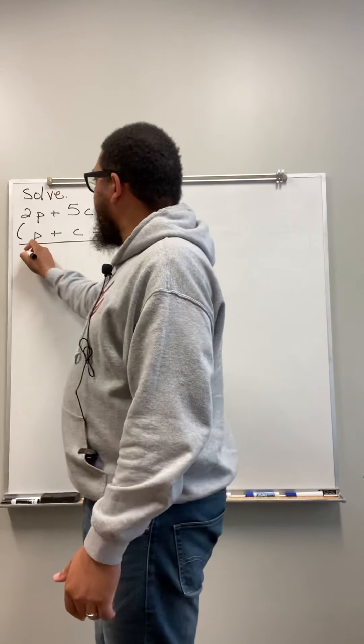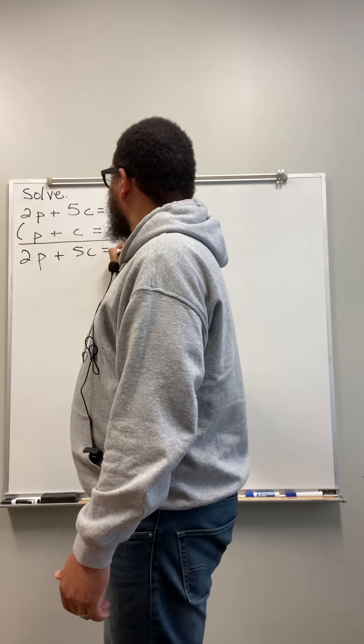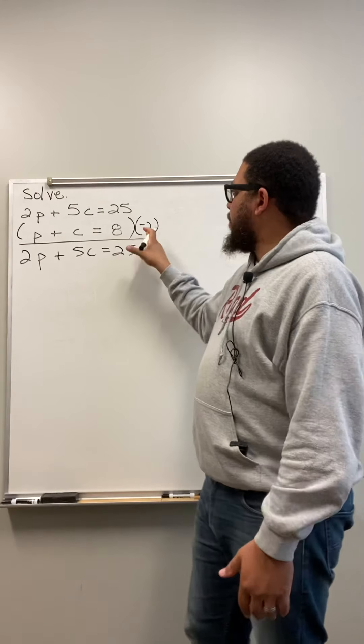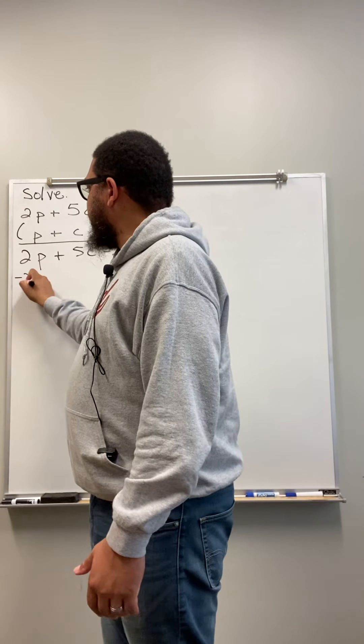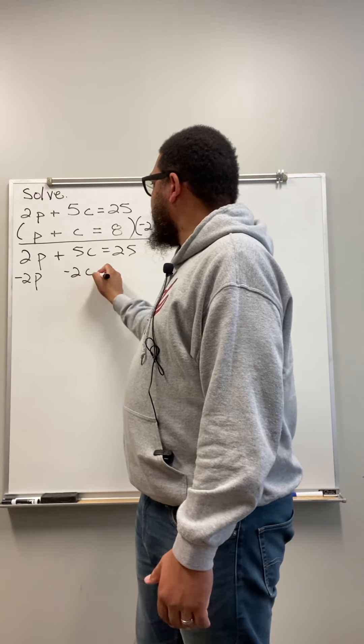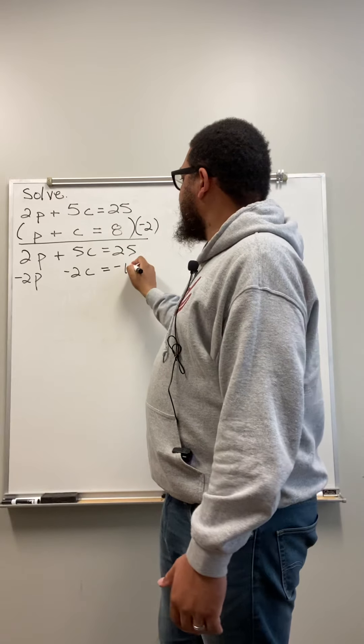So I rewrite the top equation, just as it was. 2P plus 5C is equal to 25. And then I distribute, or I multiply negative 2 by the entire bottom equation. So this P turns into negative 2P. This C turns into negative 2C. Then I write my equal sign. This 8 turns into negative 16.